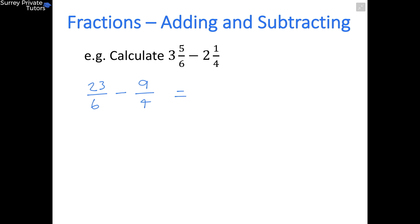Now we need to convert these two improper fractions to have the same denominator. And the lowest common multiple of 4 and 6 is 12, so they're both going to be over 12. And 6 goes into 12 twice, so you have to double your 23, so you get 46. And 4 goes into 12 three times, so you times your 9 by 3, which gives you 27.